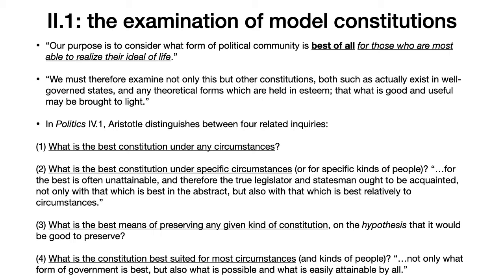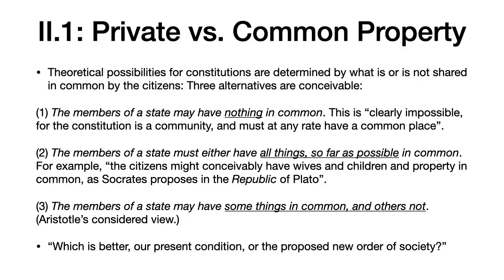It seems that in Book Two we're mostly concerned with the first question—what is the best constitution under any circumstances—because people like Plato seem to have proposed an answer to such a question and Aristotle has criticisms of them. But some of these criticisms pertain to what is actually possible under specific circumstances, and also what would really be best for most circumstances and most kinds of people. So those four inquiries, presented as distinct in Book Four, are in a way all pursued in Book Two.